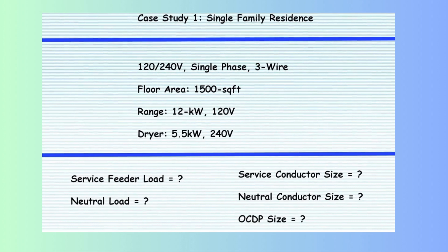Major appliances include a 12-kilowatt range and a 5.5-kilowatt dryer. Based on this information, we will calculate the following: service feeder load, which determines the total electrical demand of the residence; neutral load, representing the maximum unbalanced load the neutral conductor must carry; service and neutral conductor sizes, selected to safely handle the calculated loads in compliance with NEC requirements; and overcurrent protection device (OCPD) size, to protect the system against overcurrent conditions.